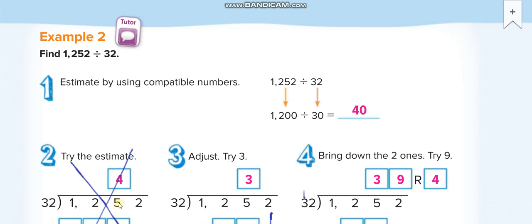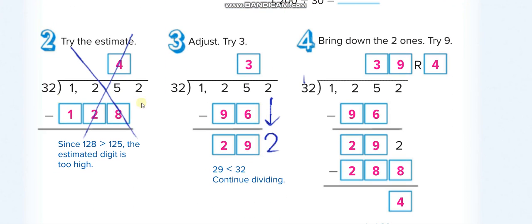You have to find out 32 times what will give you 125 or less. 32 times 4 is 128, more than 125, so we can't take that. Try one number less: 32 times 3 is 96. When you subtract, you get 29. Bring the 2 down.